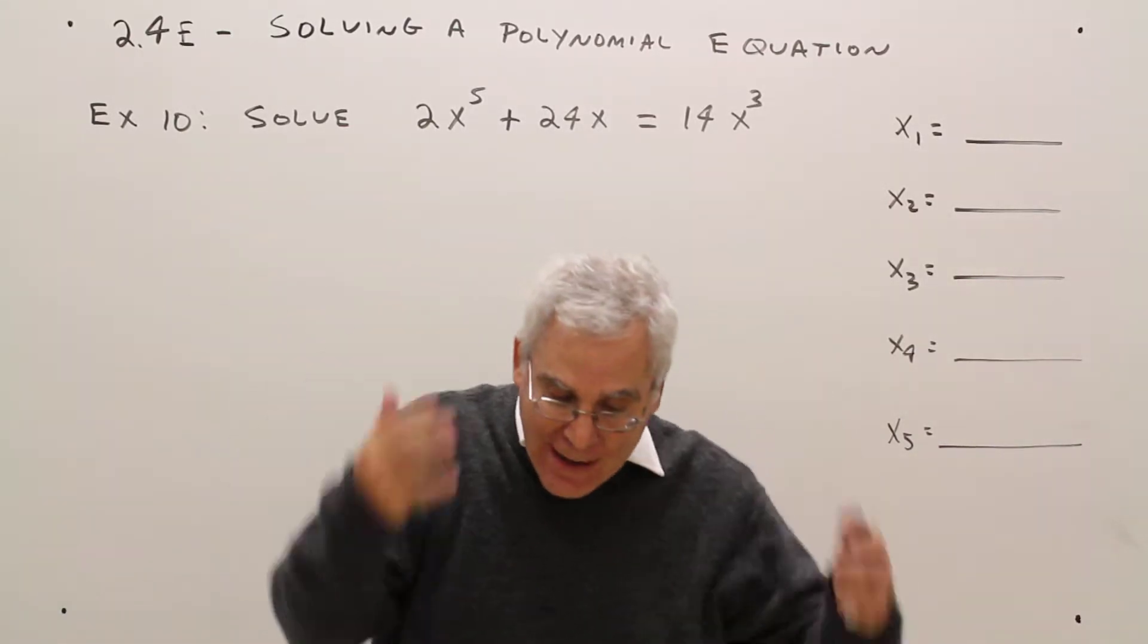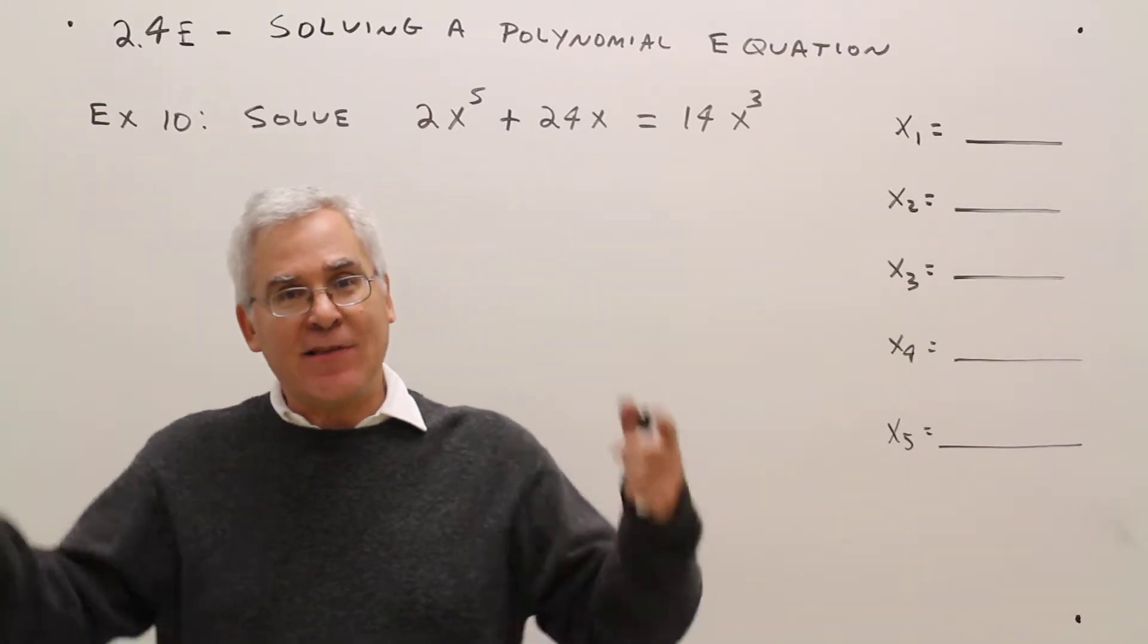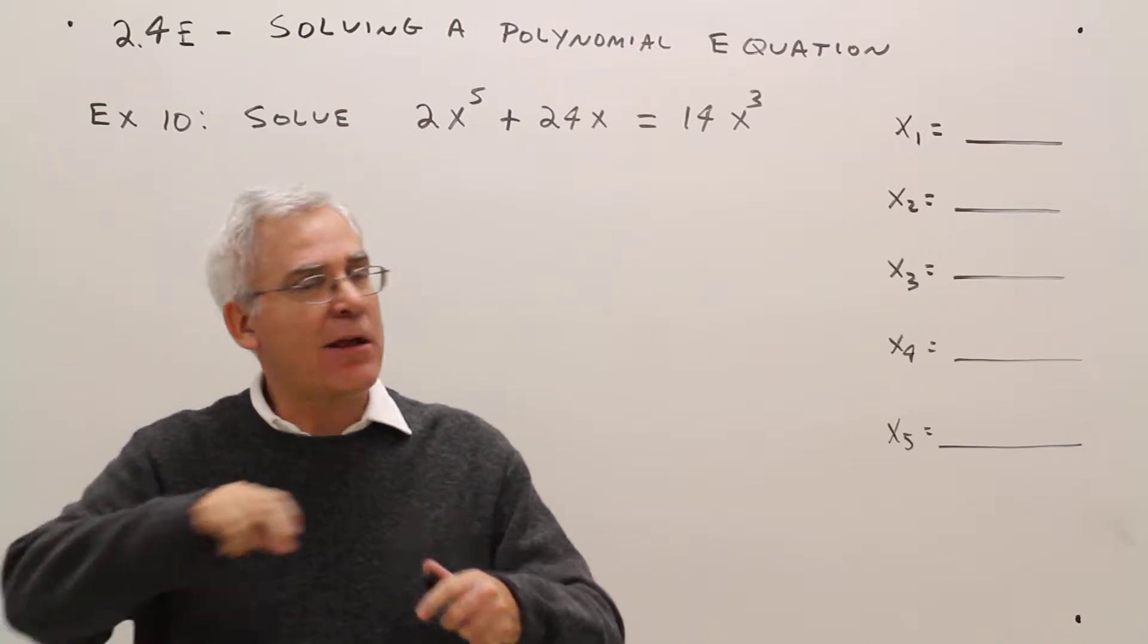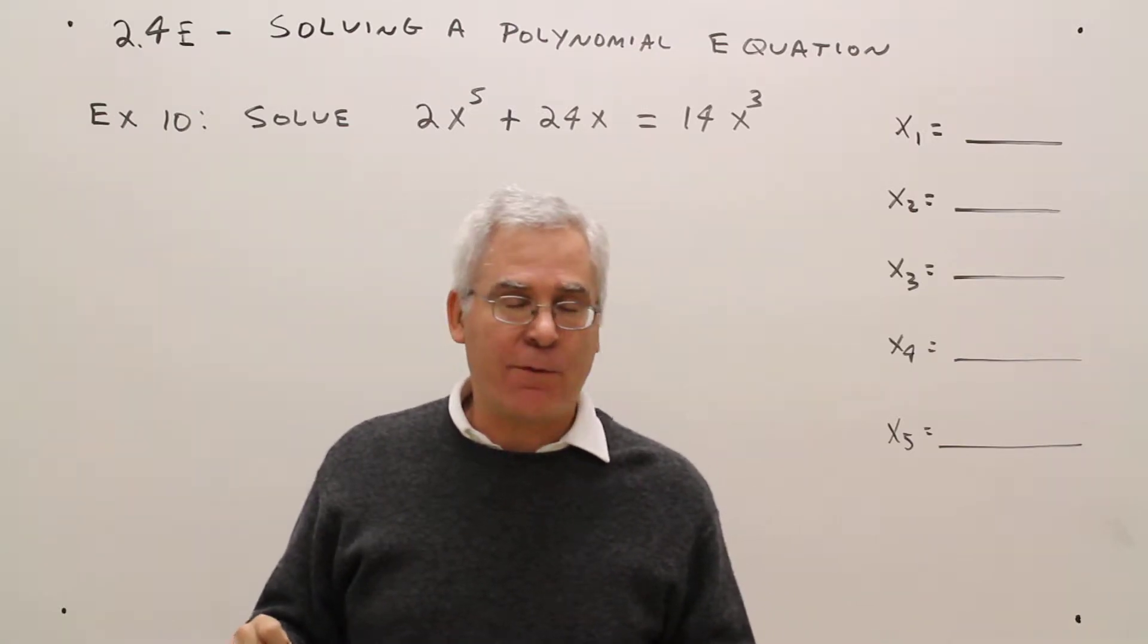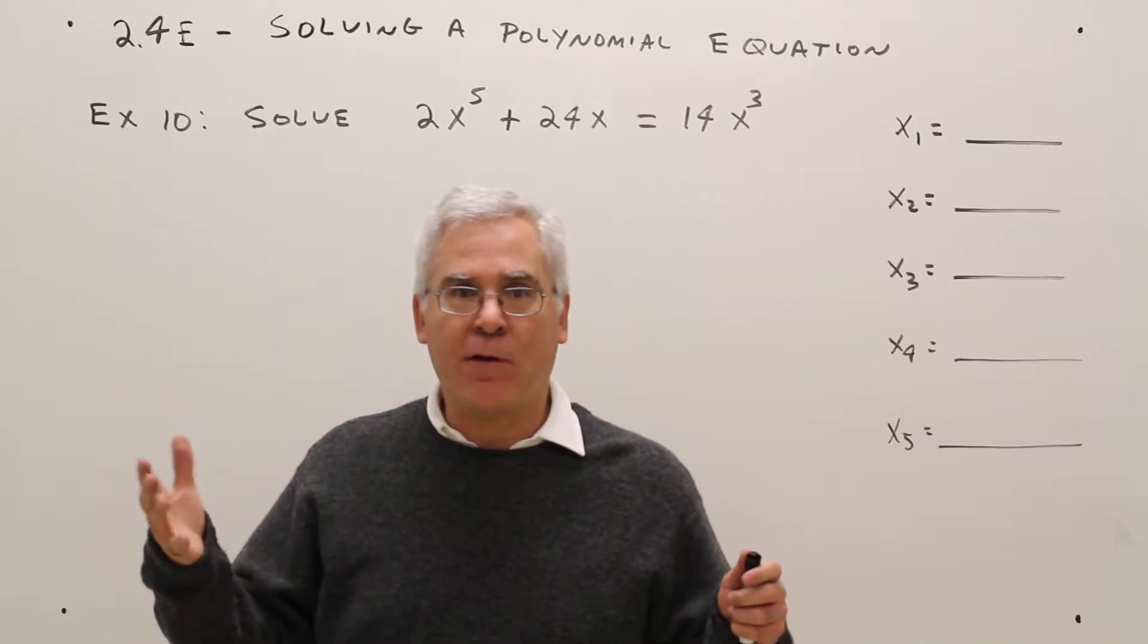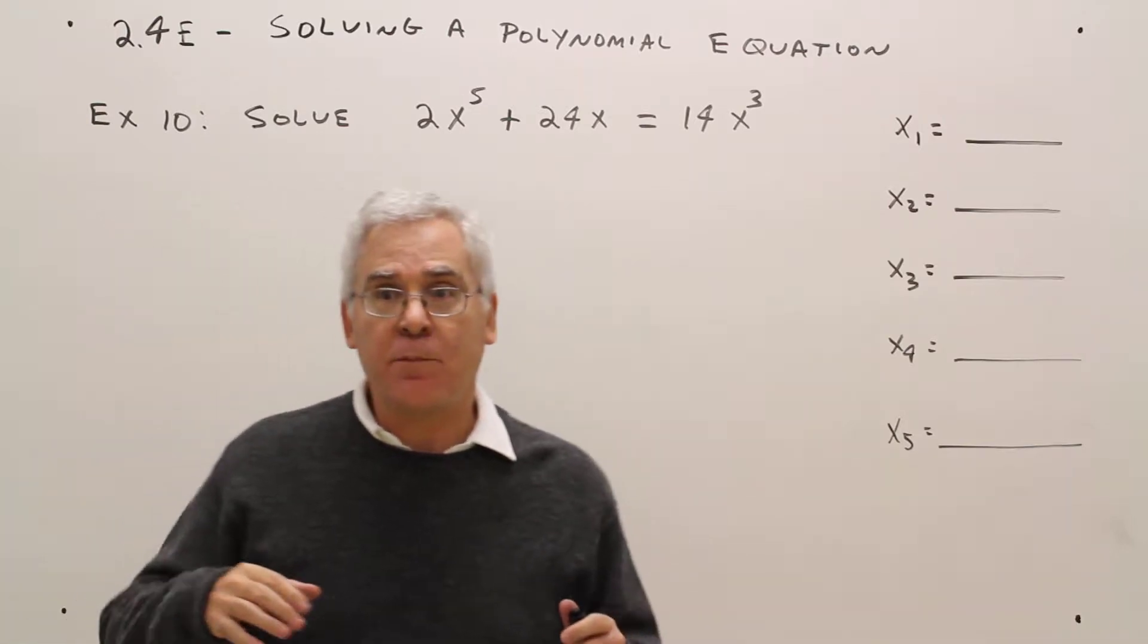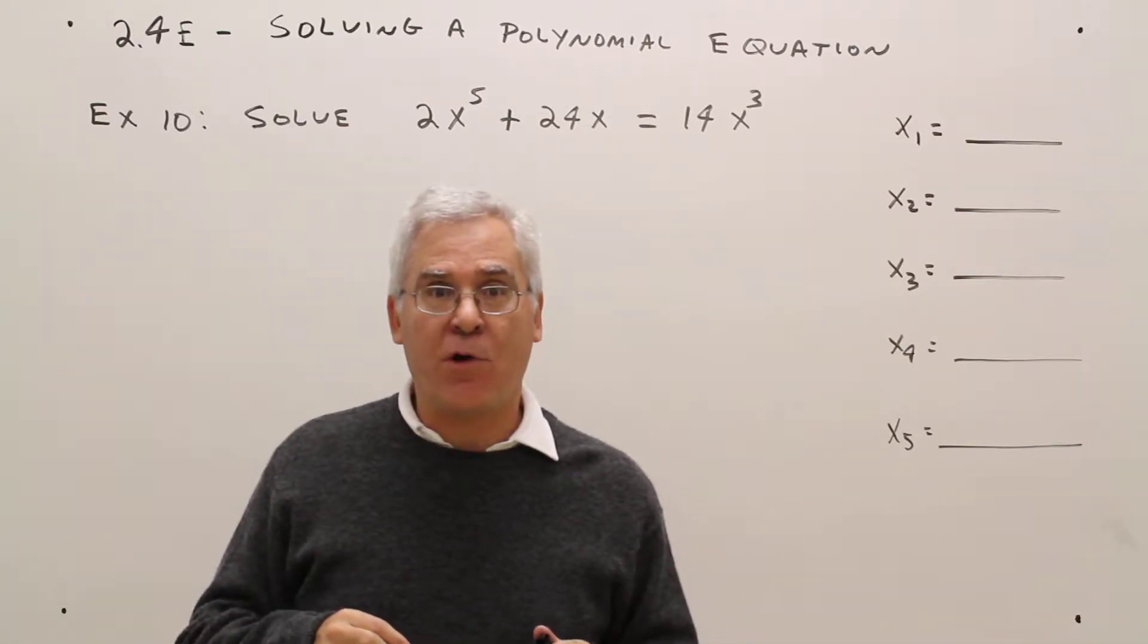So for right now, for solving polynomials, what we want to do is factor. And if we at least get the factoring down to a quadratic, we're good to go. We can use the quadratic formula, completing the square, factoring, whatever. So our main goal is to always factor, factor, factor, set it equal to zero, and use the zero product property.